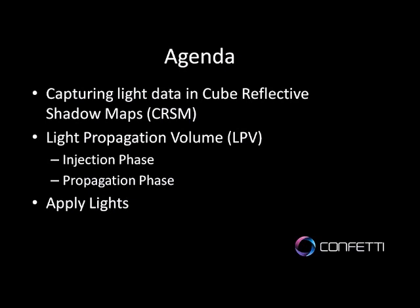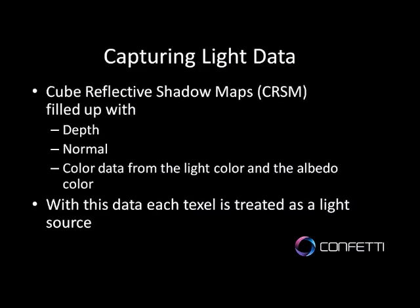How do we capture light data? Reflective shadow maps have been around for a long time - Carsten Dachsbacher published a lot of papers on this, and you can find articles in ShaderX going back five, six, seven years ago. We nearly used the technique as it was initially developed, with a couple of small changes. The main change is that it's not a 2D map but a cube map in our case, so that we can actually capture data for point lights. What we store in the cube reflective shadow maps is depth, normal, and color data for the light color and the albedo. Each texel represents a virtual light source.